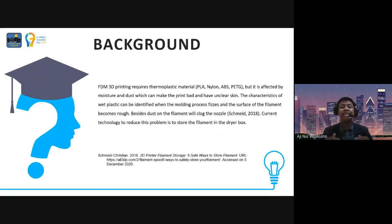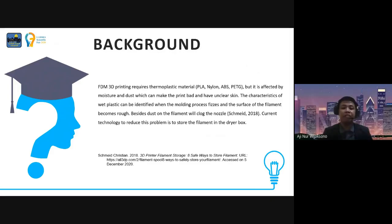FDM 3D printing requires thermoplastic materials like PLA, nylon, ABS, and PETG, but these are affected by moisture and dust, which can make the print bad and have an unclear surface. The characteristic of wet plastic can be identified when the molding process fails and the surface of the filament becomes rough. Dust on the filament will also clog the nozzle.